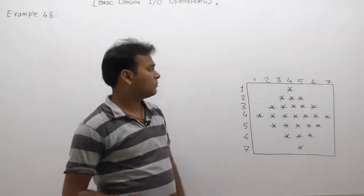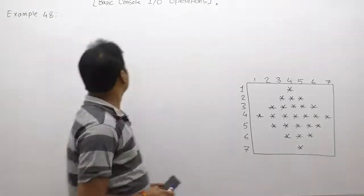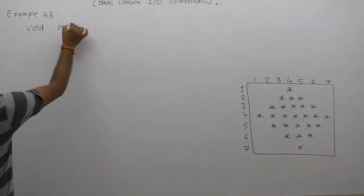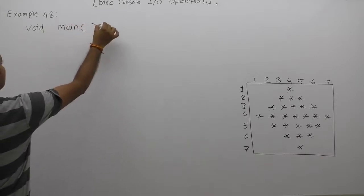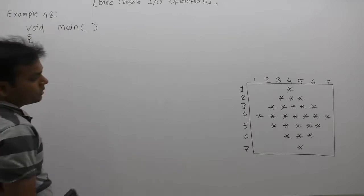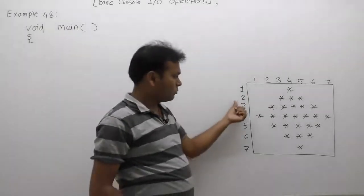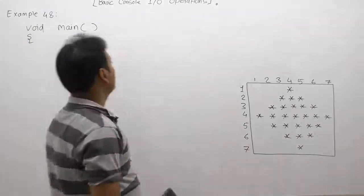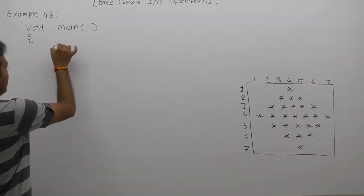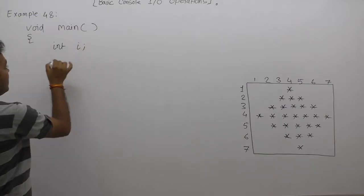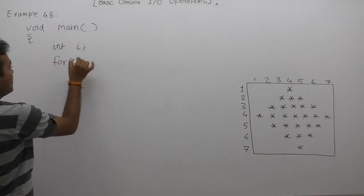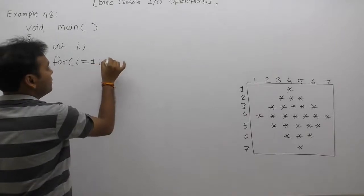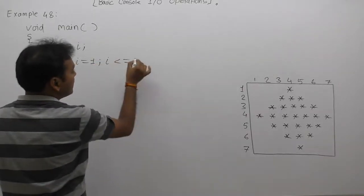One thing is clear: how many loops do we need, and how many times do we want to execute this loop? The iteration of the loops depends upon the number of required rows. Here, total rows is seven — one, two, three, four, five, six, seven. Therefore we want to execute the loop seven times. Declaring variable i: initial value of i is one, because the loop starts from one, up to seven.